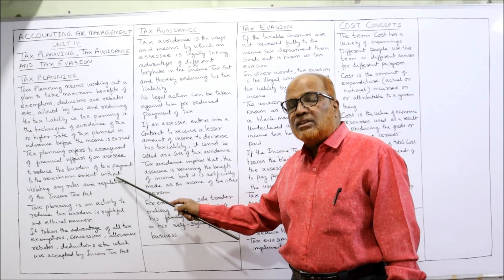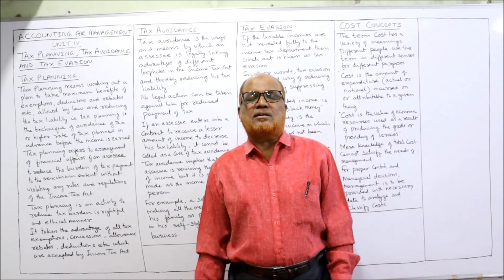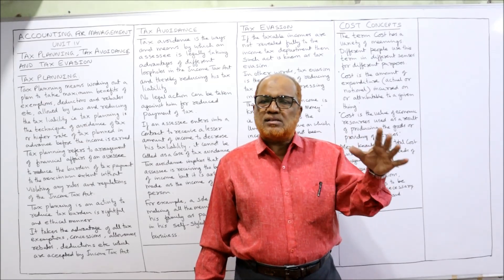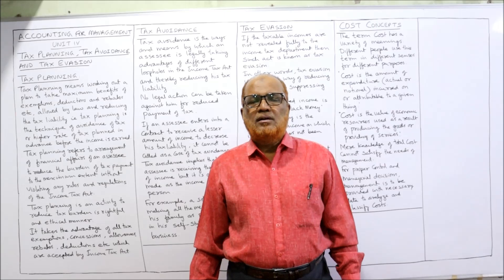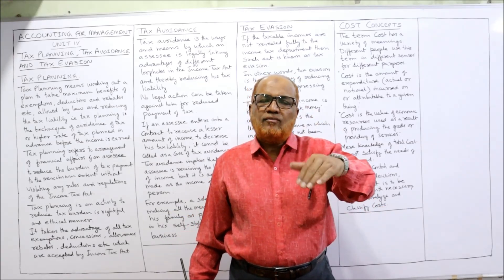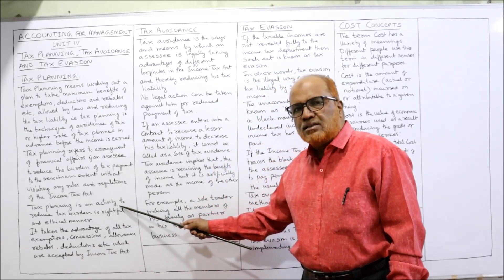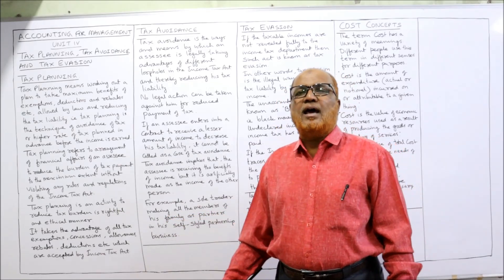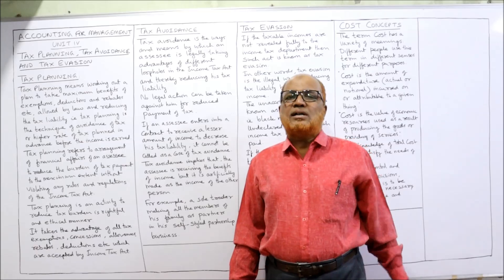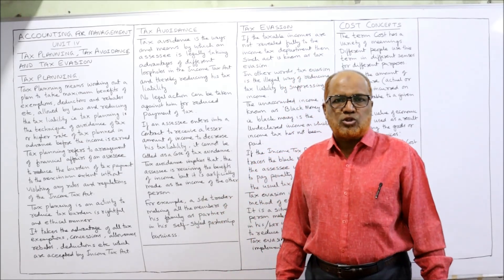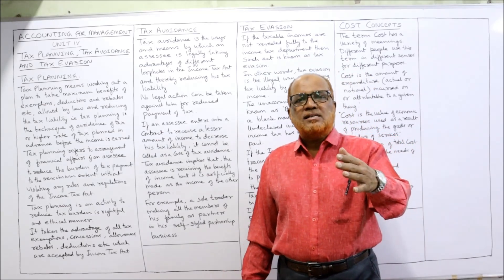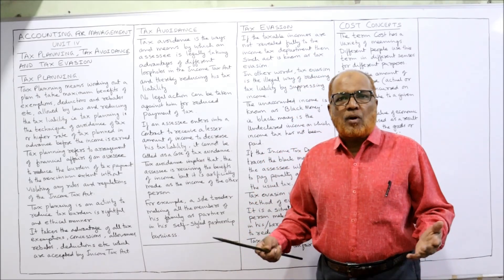The point of tax planning is to reduce the burden of tax payment to the maximum extent without violating the rules and regulations of the Income Tax Act. We are taking maximum benefits of exemptions, allowances, rebates, and deductions given by the act. We make our financial affairs in such a way that our total income will be reduced and our tax liability will be reduced. For example, if a person has made investments in a provident fund or mutual fund, or has paid insurance premiums, the Income Tax Act allows exemptions for these.